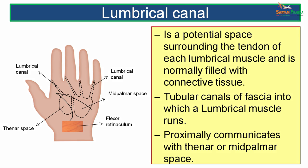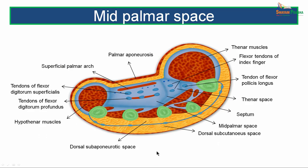The lumbrical canal is a potential space surrounding the tendon of each lumbrical muscle and is normally filled with connective tissue. It is a tubular canal of fascia through which a lumbrical muscle runs. Proximally, it communicates with the thenar or the mid-palmar space. The picture shows the four lumbrical canals — potential fascial canals through which the lumbrical muscles run — with the thenar space laterally and the mid-palmar space medially.